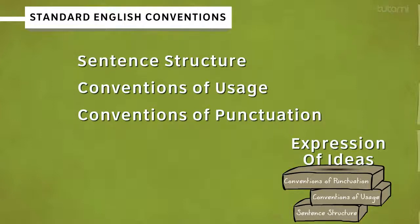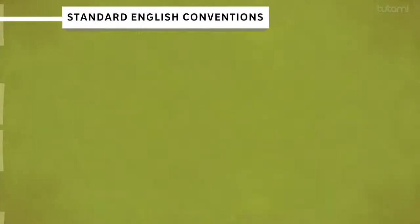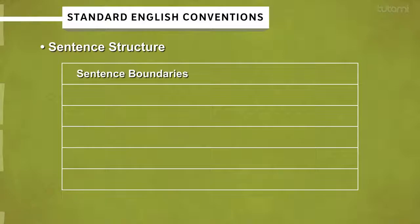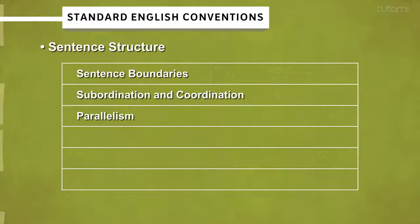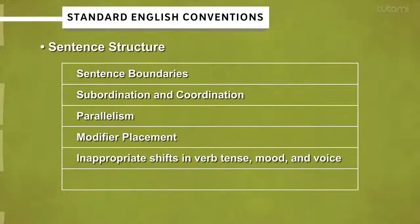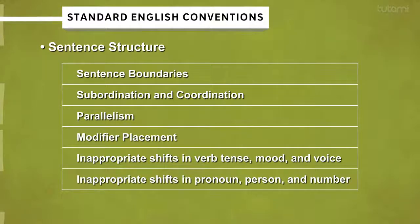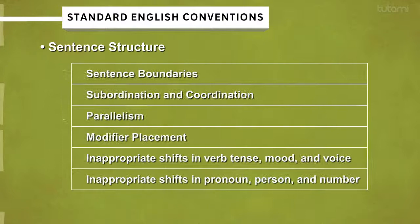In these first two lessons, we'll take a look at all the elements that make up sentence structure, such as sentence boundaries, subordination and coordination, parallelism, modifier placement, inappropriate shifts in verb tense, mood, and voice, and inappropriate shifts in pronoun, person, and number.